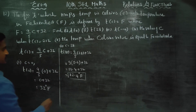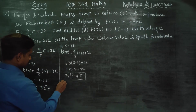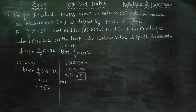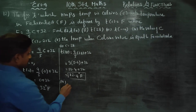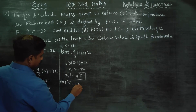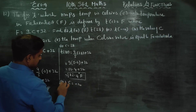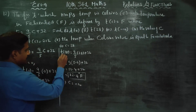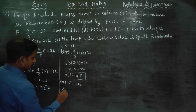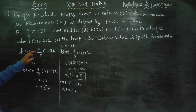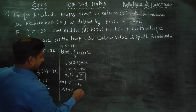After this, sum number 3: C is equal to minus 10. When C is equal to minus 10, we apply T of minus 10 using the same formula: 9 by 5 into minus 10 plus 32.